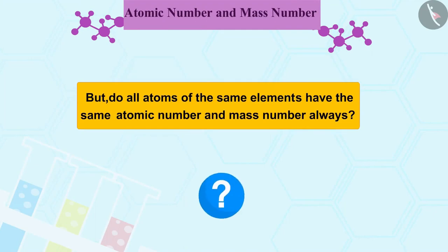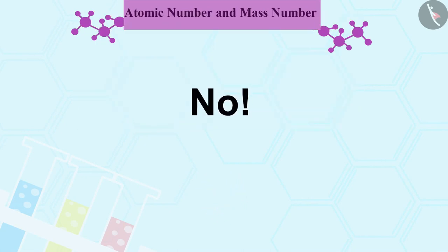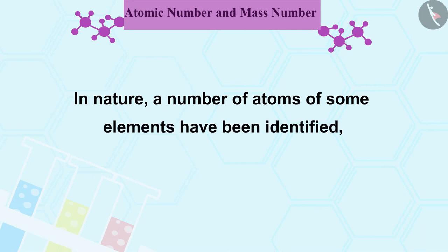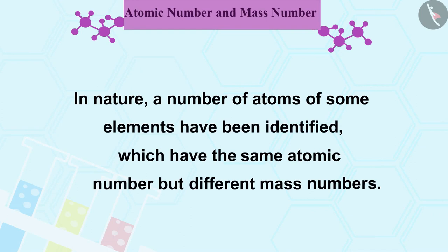But do all atoms of the same elements have the same atomic number and mass number? No. In nature, a number of atoms of some elements have been identified which have the same atomic number but different mass numbers.